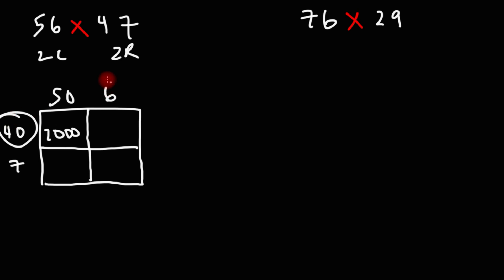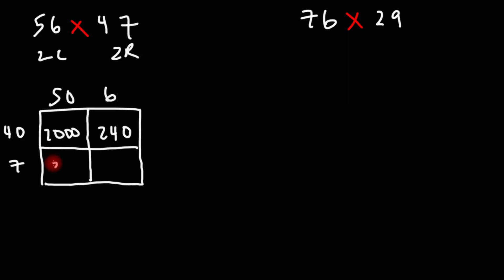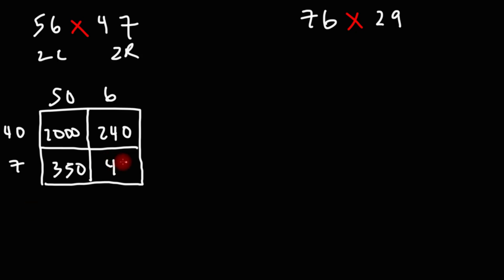Next we have 40 times 6. 4 times 6 is 24; if we add the one zero we'll get 240. To get what's in the next box we need to multiply 7 by 50. 7 times 5 is 35; add the zero, that becomes 350. And here we have 7 times 6, which will give us 42.